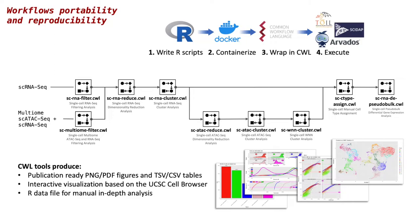As a result, we have a set of tools that can be chained together to form various pipelines for single cell RNA, ATAC, and multi-omics sequencing data analysis. The workflows and tools produce publication-ready plots, tab-delimited tables, interactive visualization based on the UCSC cell browser, and R data files for in-depth analysis if needed.